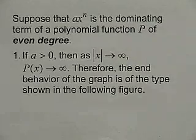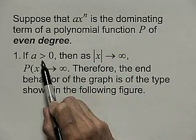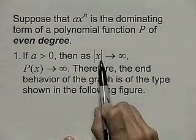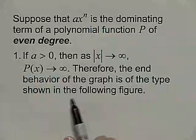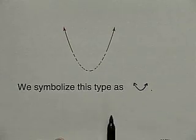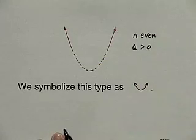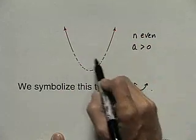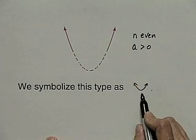Let's talk about even degree polynomials and end behavior. Suppose that ax to the n is the dominating term of a polynomial function p of even degree, so n is an even number. If a is positive, then as the absolute value of x goes to infinity, p of x goes to infinity. The end behavior of the graph is of the type shown — as x goes to both negative infinity and positive infinity, the function goes to positive infinity. Remember this is smooth but irregular behavior, and here's the symbol we use to represent this end behavior.